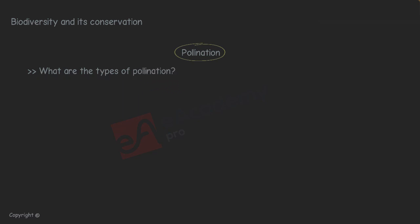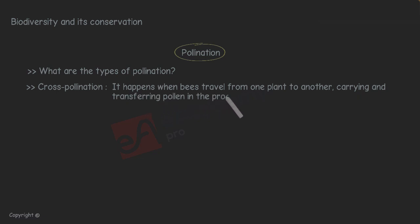There are different ways for plants to be pollinated. Cross-pollination. This is the type of pollination that happens when bees travel from one plant to another, carrying and transferring pollen in the process.